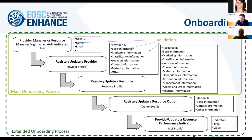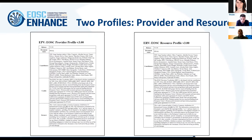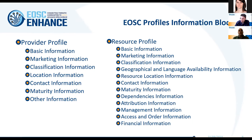After that, the user must provide information about the first service which will populate the catalog for that provider. All the information collected for this resource is called the resource profile. These two types — the provider profile and EOSC resource profile — are standards that have been agreed upon, and we are now in version 3.0. These are evolving, but the portal currently supports this version.